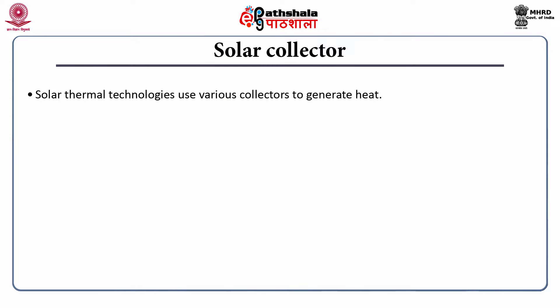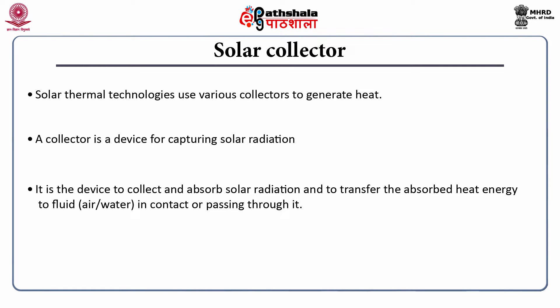The solar collector works on the greenhouse effect principle. Solar radiation incident upon the transparent surface of the solar collector is transmitted through this surface. The solar collector is the device to collect and absorb solar radiation and to transfer the absorbed heat energy to the fluid — either air or water — in contact or passing through it.